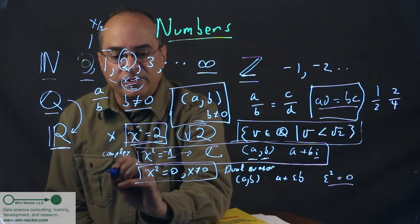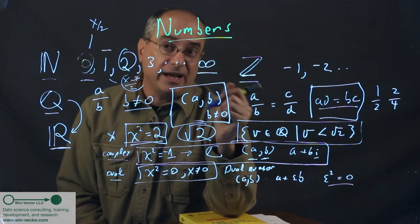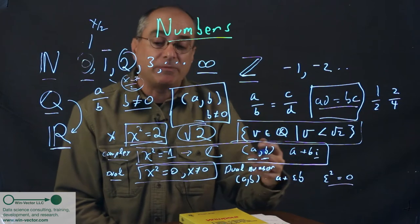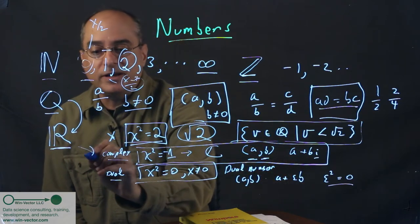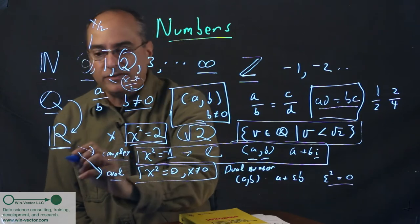Very strange number system. But if you invent the dual numbers, you invent the entire field of automatic differentiation, and you invent backprop, which is how neural nets compute gradients for optimization. So trying these different incompatible numbers, extensions, gives you different things. And I'm going to do one last extension.